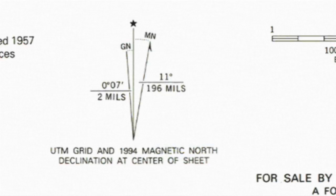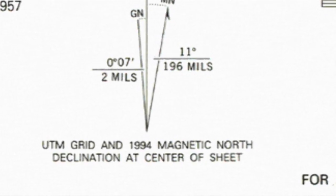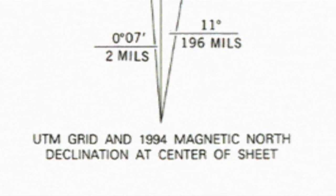To the right of true north, we see 11 degrees marked off to MN, which you might guess means magnetic north. Unfortunately, the older your map is, the less reliable this magnetic declination number will be.